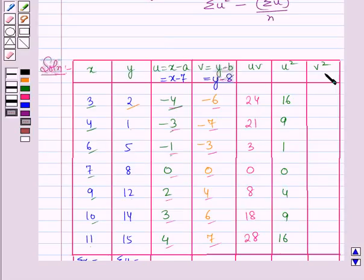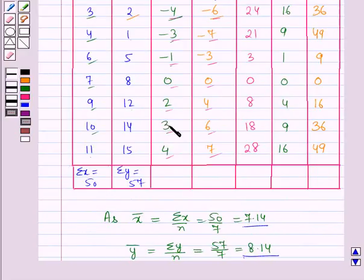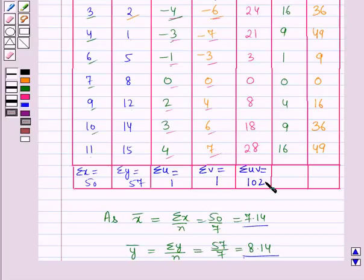For v² we square each v value: (−6)² = 36, (−7)² = 49, (−3)² = 9, 0² = 0, 4² = 16, 6² = 36, 7² = 49. On adding: summation u = 1, summation uv = 102, summation u² = 55, and summation v² = 195.